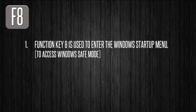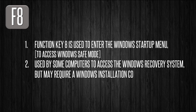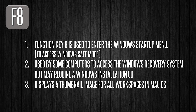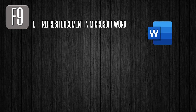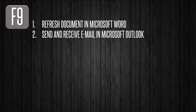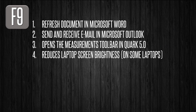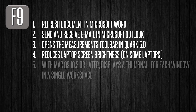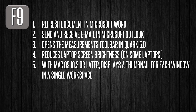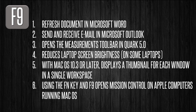Function key F8 is used to enter the Windows startup menu, commonly used to access Windows Safe Mode. It is also used by some computers to access the Windows recovery system, but may require a Windows installation CD. It also displays a thumbnail image for all workspaces in macOS. F9 is used to refresh a document in Microsoft Word, and it sends and receives emails in Microsoft Outlook. F9 also opens the measurement toolbar in Quark. It reduces the laptop's screen brightness on some laptops along with the Fn button. With macOS 10 or later, it displays a thumbnail for each window on a single workspace, and F9 along with the Fn key opens Mission Control.